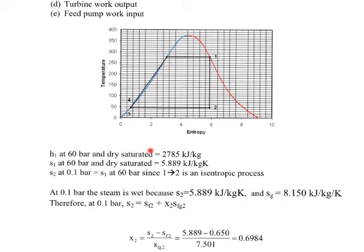So, let's look at how we obtain the enthalpy H1 from the steam table. So, at 60 bar and dry saturated conditions, how do we indeed get 2,785 kJ per kilogram? Let's look at the steam tables.